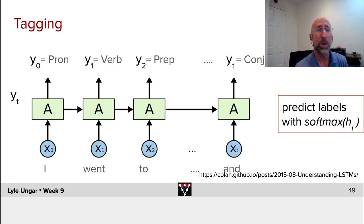And this is used a lot for trying to label, for example, named entities. Is this word referring to a person? Is this word referring to a country? Is this word referring to a city? Is this word referring to none of the above? So labeling every word with what sort of thing it is.